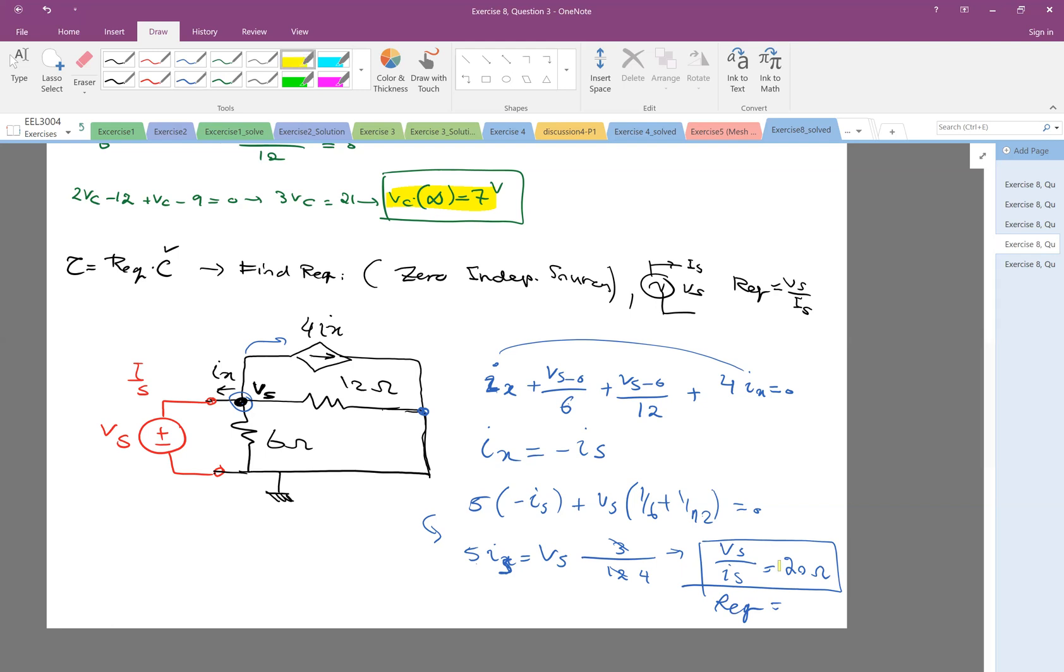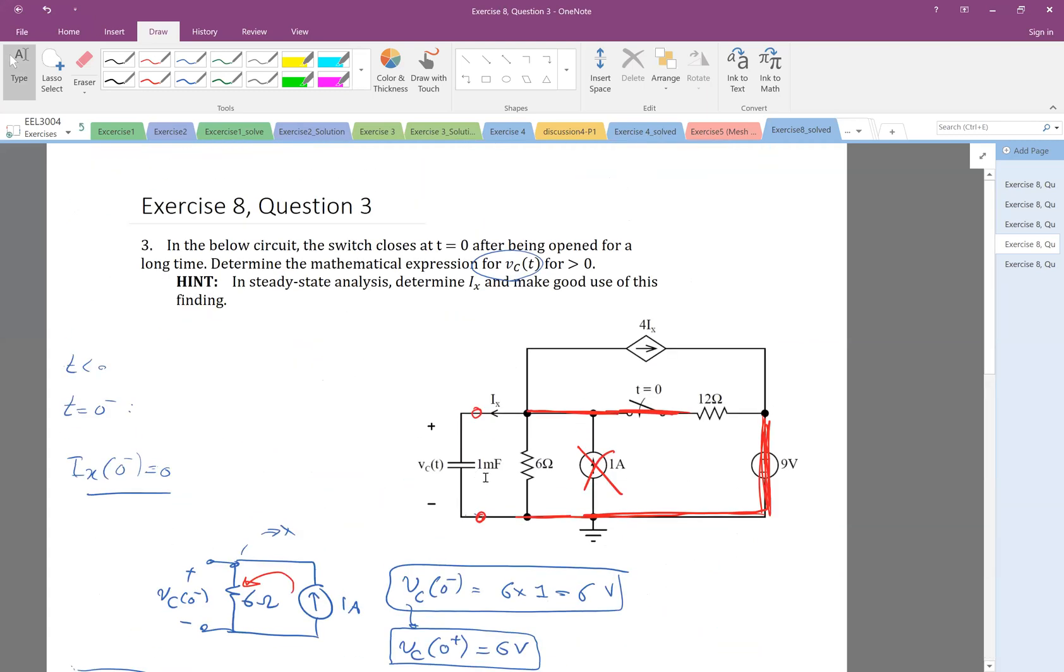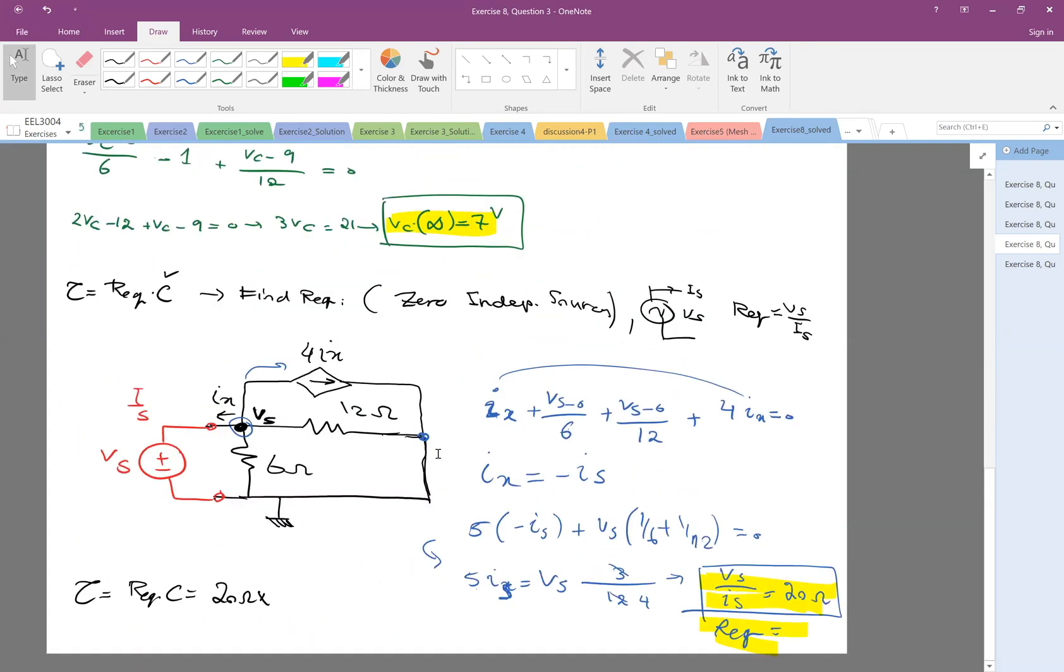So my R equivalent is 20 ohm, so therefore the tau is R equivalent times C, which is 20 ohm, times C, which is 1 millifarad. This total becomes 20 millisecond.